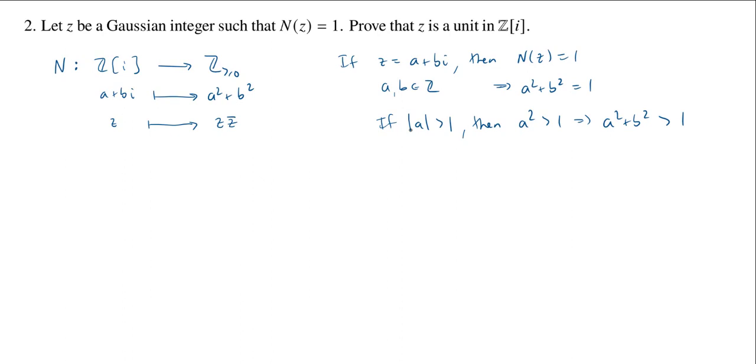A squared plus b squared is equal to 1. And similarly, if the absolute value of b is greater than 1, we get the same conclusion. So we conclude, then, that a and b have to have absolute value less than or equal to 1.